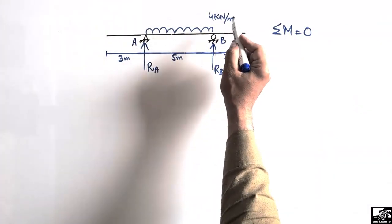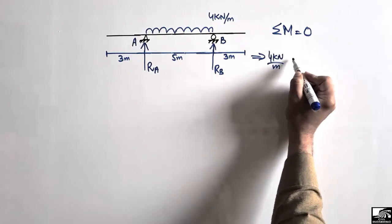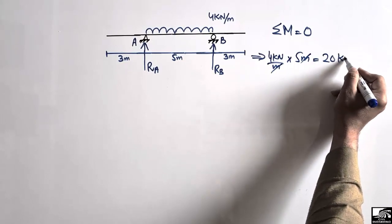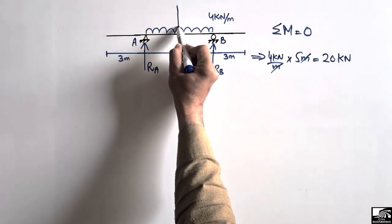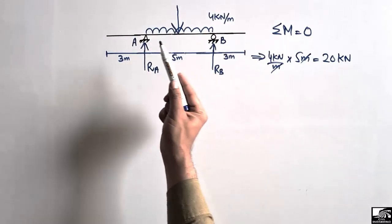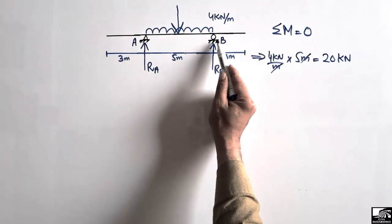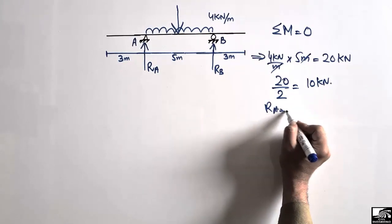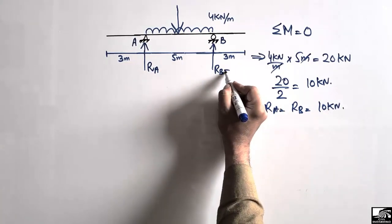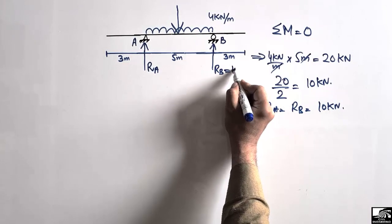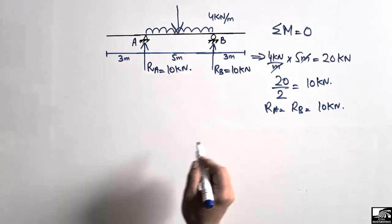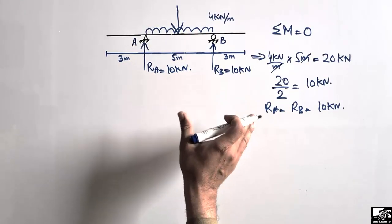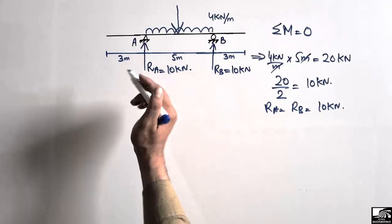4 kN/m multiplied by 5 m gives 20 kN total load acting at the center of the beam. This load is divided equally between the two supports, so 20 divided by 2 equals 10 kN. Therefore RA = RB = 10 kN. This simple method applies when there is a symmetric beam with symmetric loading.